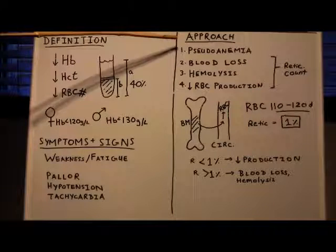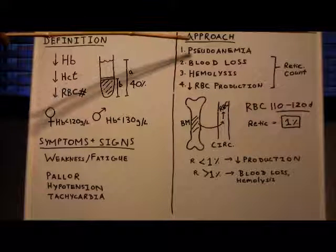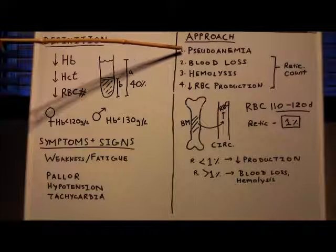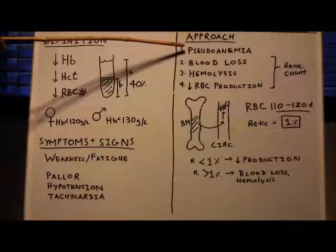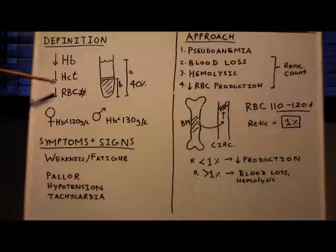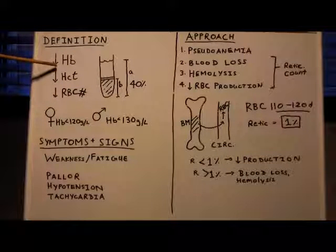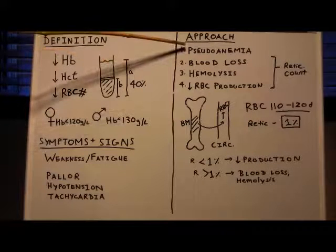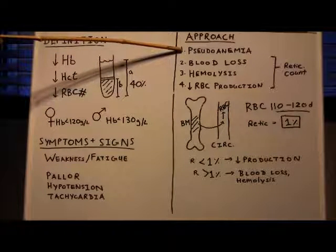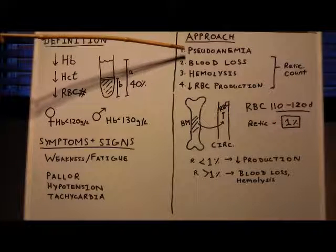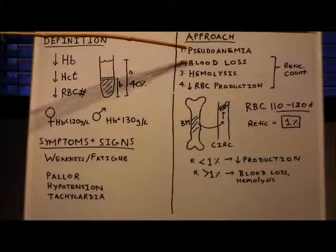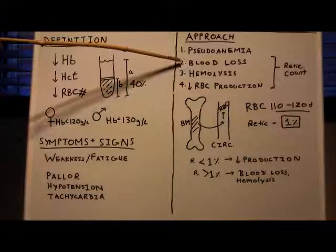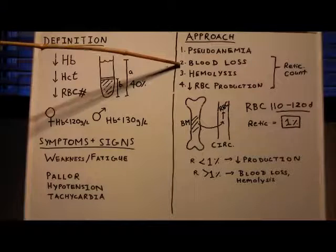So approach. The causes of anemia can be divided into four main classes. Number one is pseudoanemia, a false anemia. Remember how I said all of these numbers are concentrations? If you increase the volume, all of these numbers are going to drop, and it's going to look like you have anemia. Examples of pseudoanemia are someone who is receiving lots of intravenous fluids, or pregnancy, where your volume will increase more than your blood cell mass.